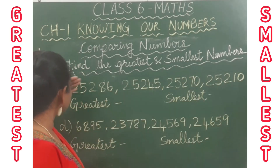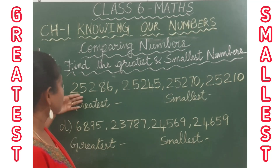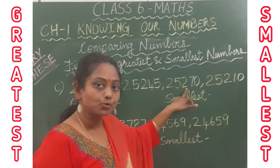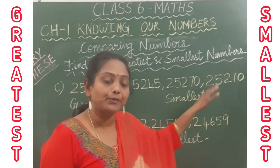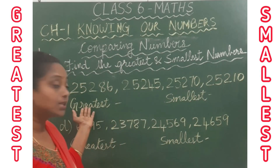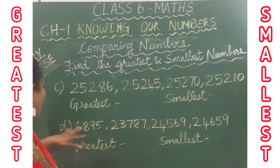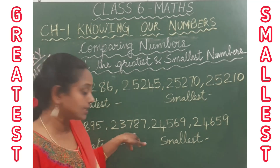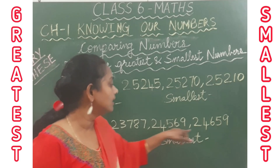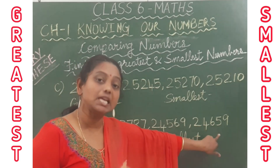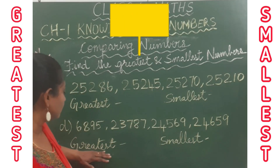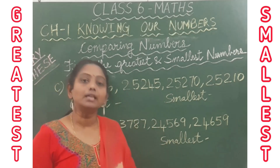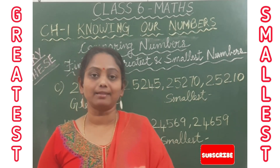Now you have to try these two questions. Question C: 25,286; 25,245; 25,270; 25,210 — find the greatest and smallest. Question D: 6,895; 23,787; 24,569; 24,659 — find the greatest and smallest. Try these questions and comment in the comment box. Please like, share, and subscribe. I'll see you next time.